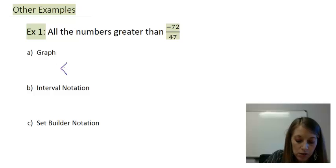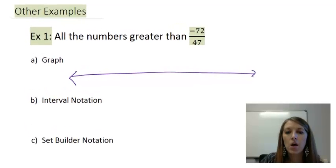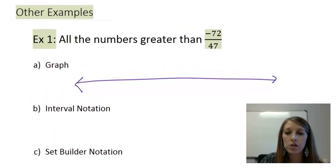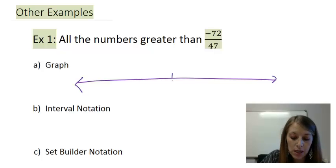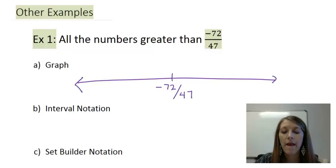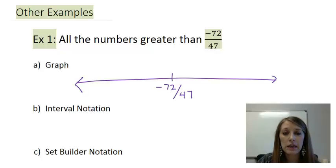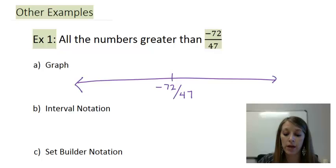The only number I'm going to put on my number line is the very important number in question — in this case, negative 72 over 47. Now if this would reduce as a fraction, I would do that, but otherwise I'm not going to change it in any way — no decimal representation, no mixed fraction. It really does not matter here. All I want to do is figure out how to notate this in different ways.